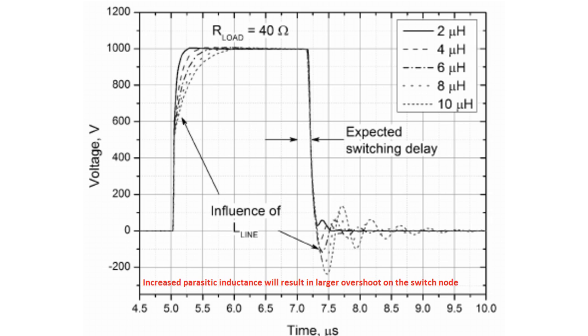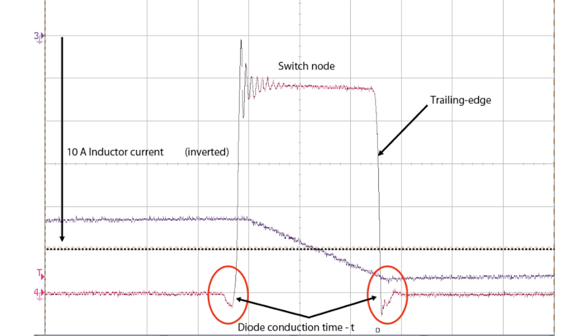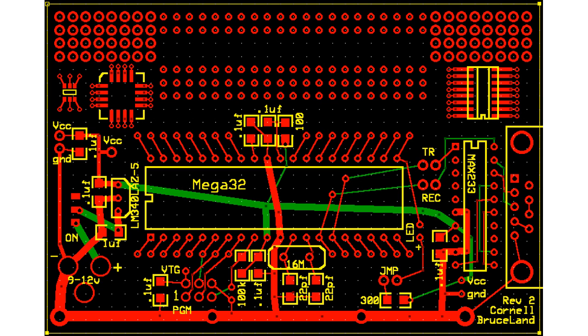Increased parasitic inductance will result in larger overshoot on the switch node. Packaged parasitic components are just a part of the overall picture, however board layout also plays a very important role.